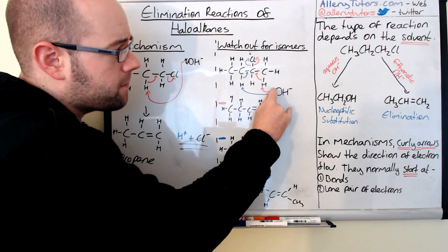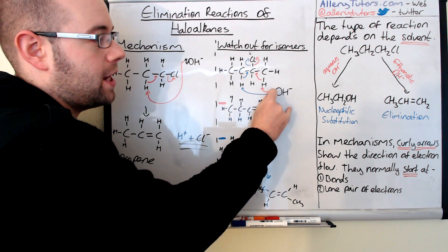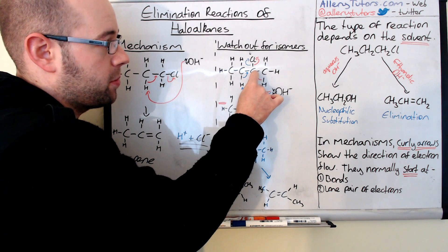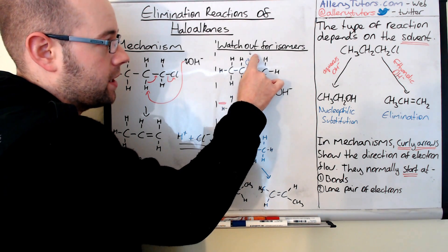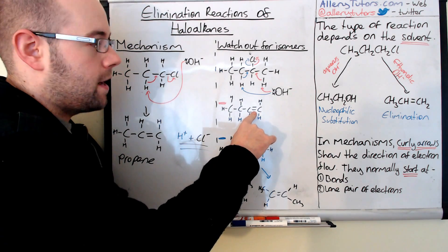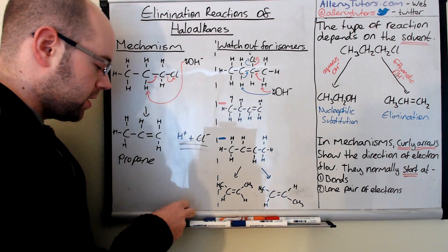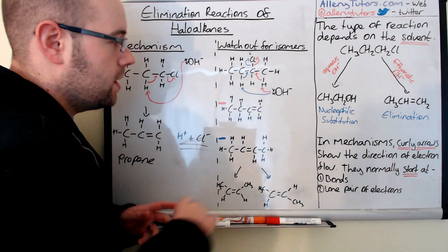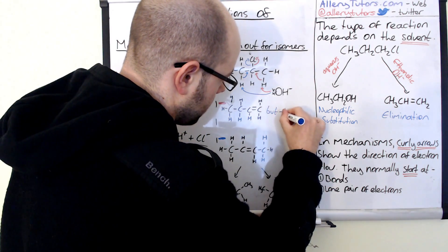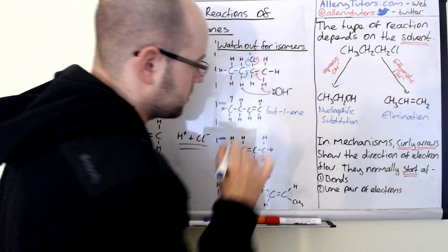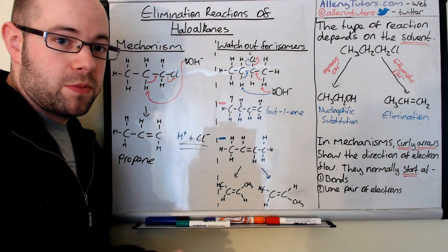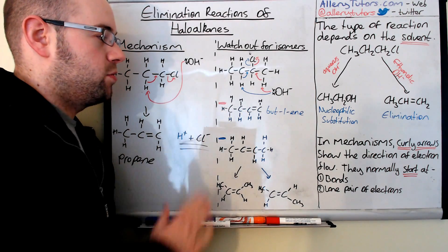Following the red arrow: the electrons go from the lone pair onto the proton. The electrons from this bond form the double bond, and that kicks off the halogen. The double bond is now formed between carbons one and two. This product is called but-1-ene. There is no other type of isomerism here — that's all we get, which is but-1-ene.